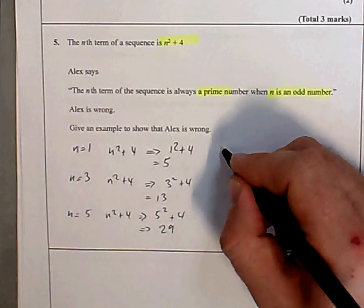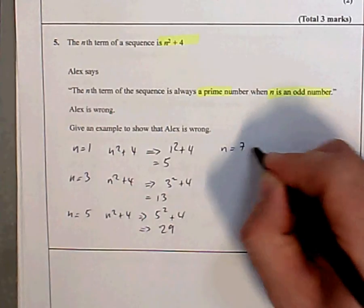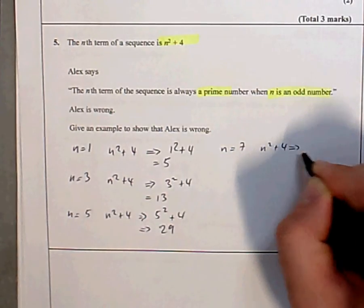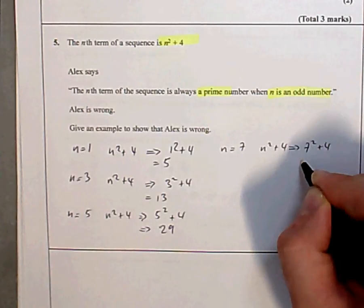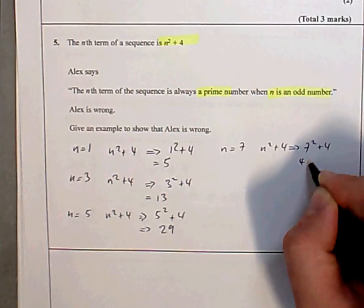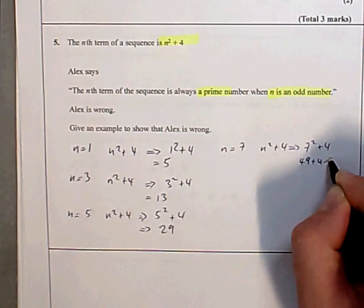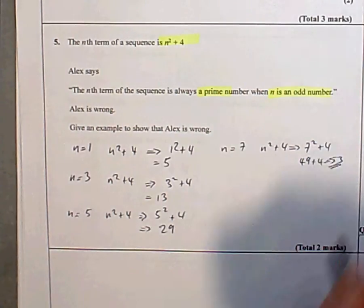Keep going. n equals 7. n squared plus 4. 7 squared plus 4. 7 squared is 49, plus 4 is 53. Prime.